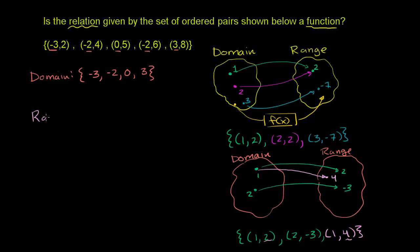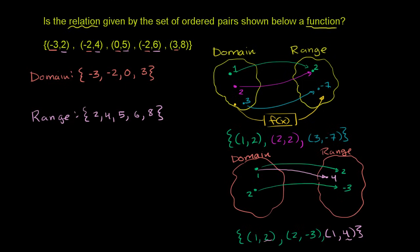The range consists of the possible outputs — the numbers associated with the numbers in the domain. The range includes 2, 4, 5, 6, and 8. Now let's draw the actual associations between the domain and the range.